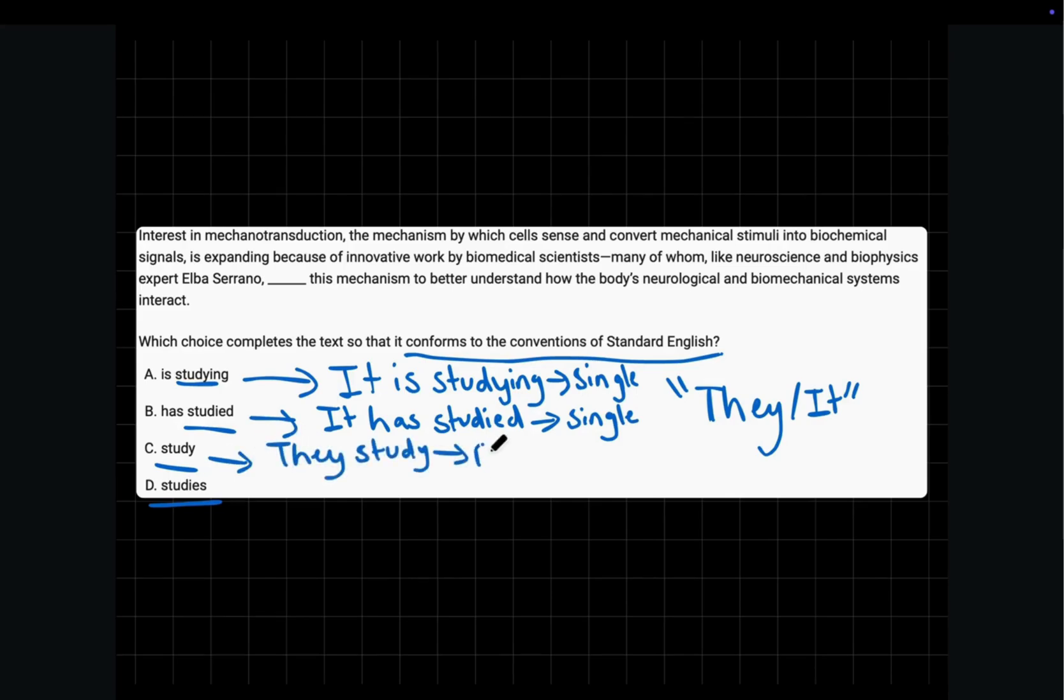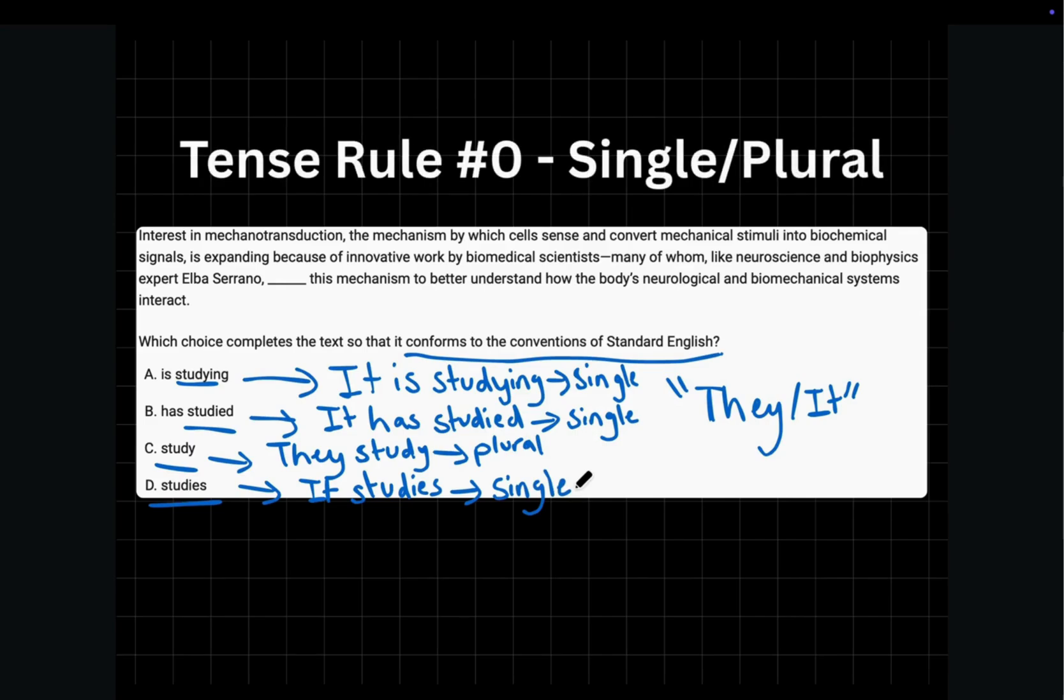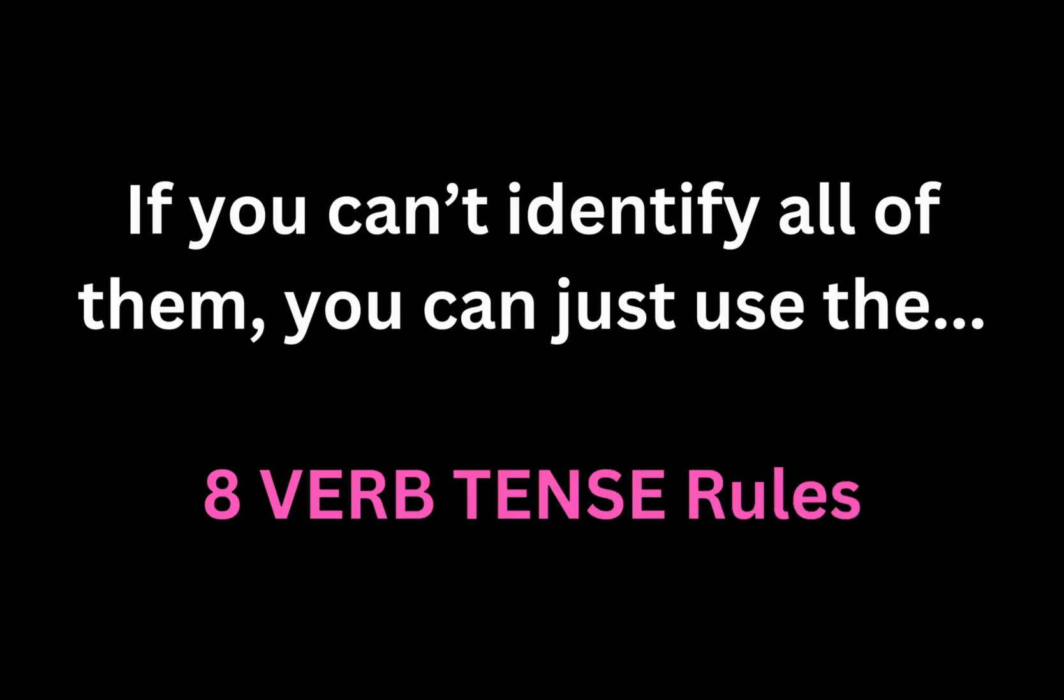Choice C. They study or it study? They study makes more sense, so it is plural. Choice D. They studies or it studies? It studies. So this choice is singular. So when you are able to identify all of them, then it is a singular and plural question and you will pick the choice that is unlike the others. In this case, choice C. If you cannot identify all of them, however, you can just use the eight grammar rules that I am going to explain.